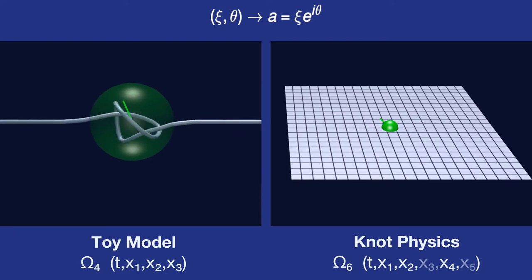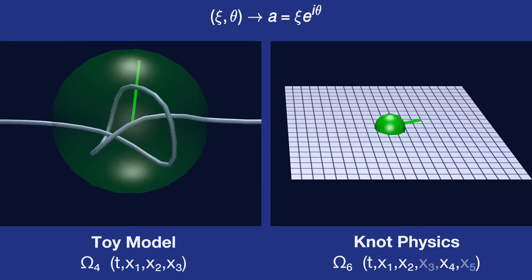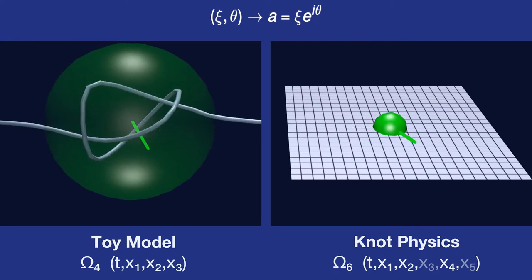In knot physics, particles are knots in the spacetime manifold. Those knots have degrees of freedom such that they can change size and rotate.